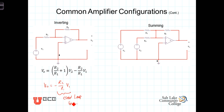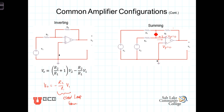The final configuration is the summing amplifier. Both V1 and V2 are connected to the inverting terminal, and the non-inverting terminal is tied to ground. So V sub P equals zero, and by the virtual short, V sub N also equals zero. Writing the node equation at the inverting terminal, the current going into the op-amp itself is zero, but we have three other branch currents that must sum to zero.